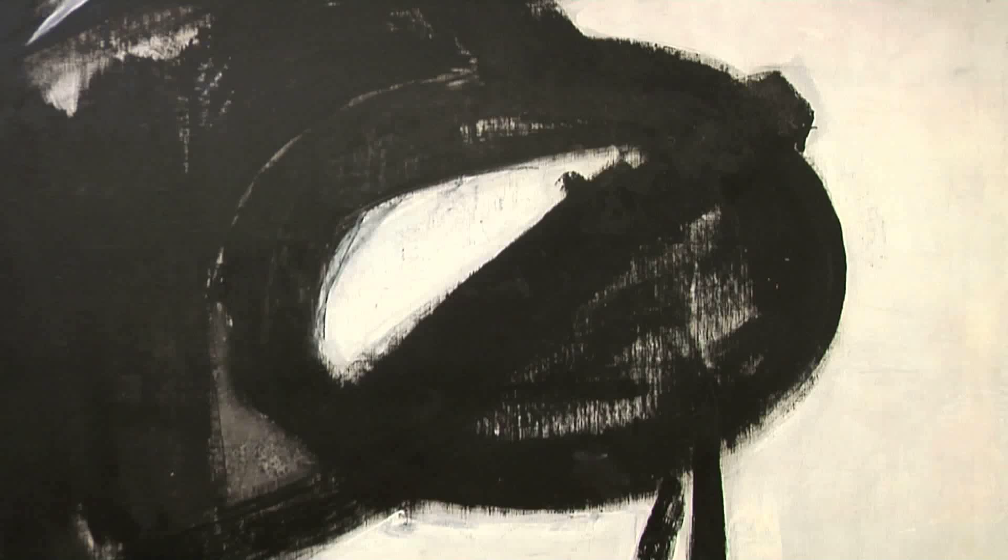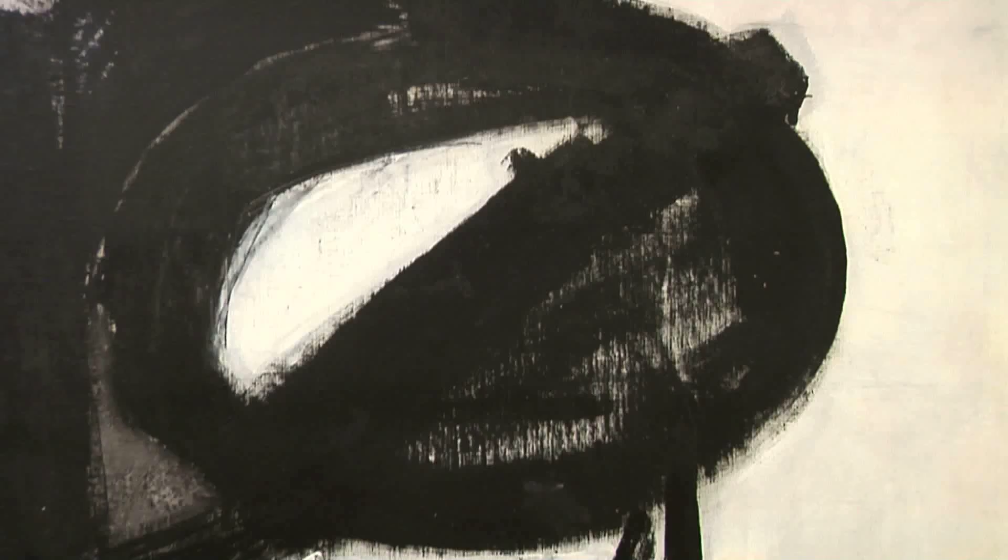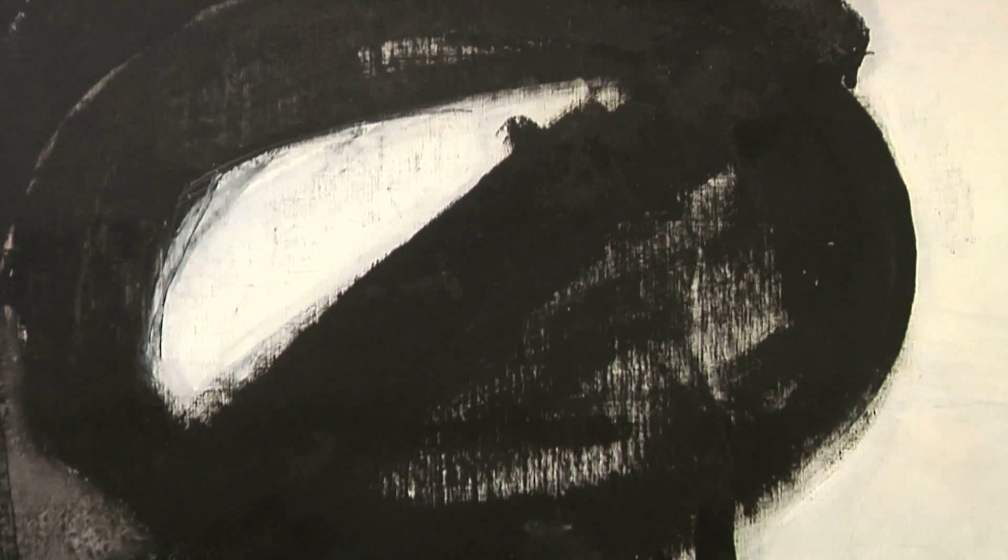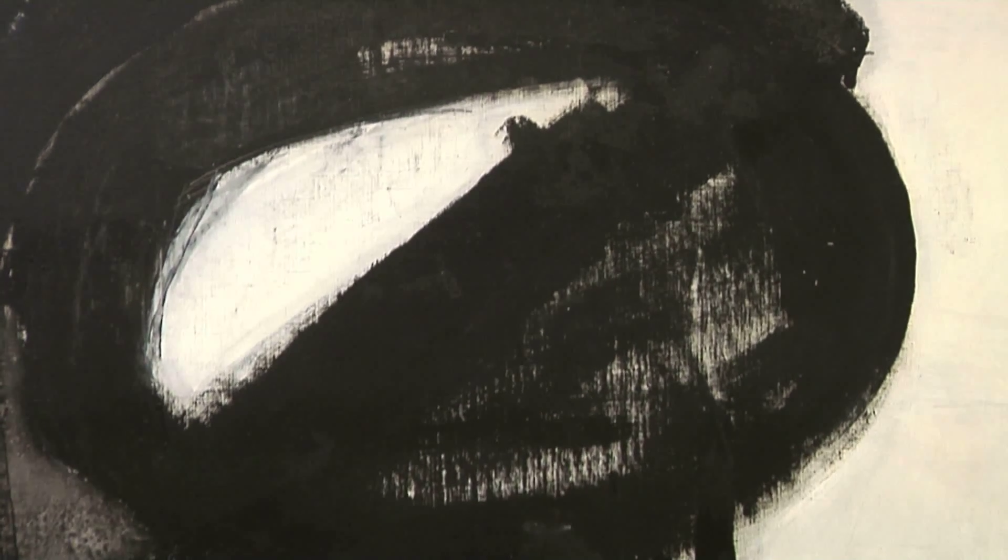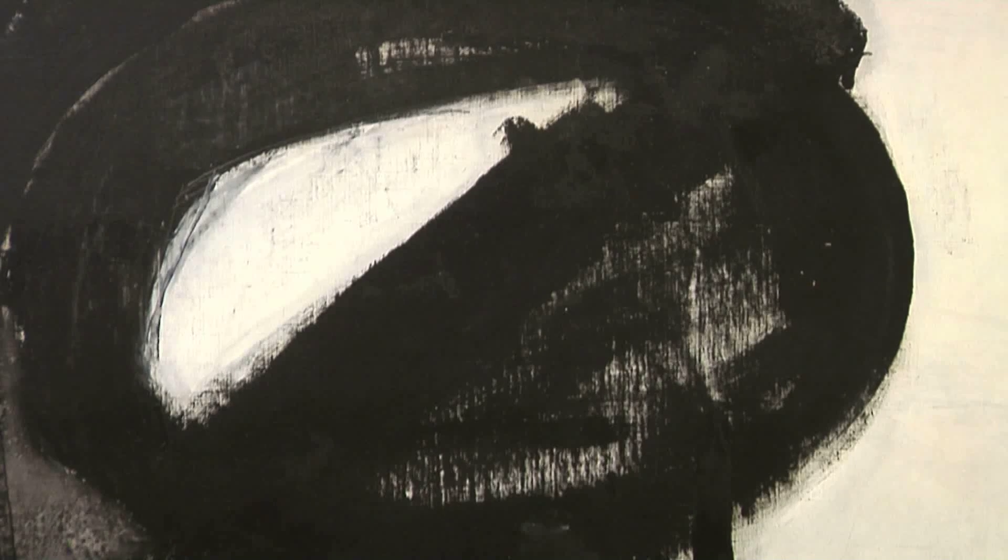It was a transformative moment for Kline, and he realized that the abstract language that he wanted to pursue was based on that, figure on ground, or in this case, black on white.